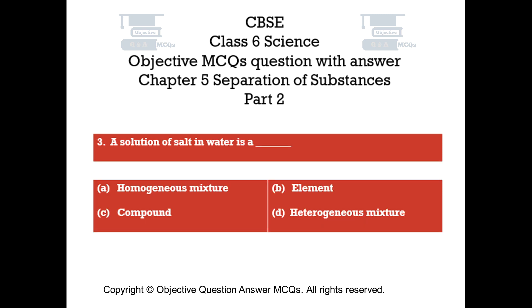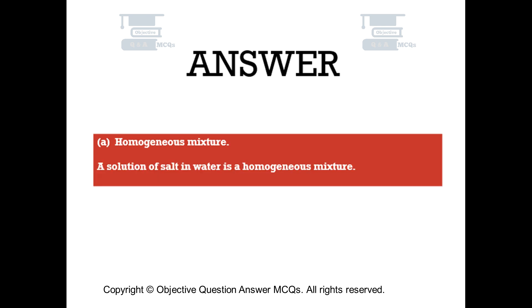Question number 3. A solution of salt in water is: Option A, Homogeneous mixture. Option B, Element. Option C, Compound. Option D, Heterogeneous mixture. The right answer is Option A — Homogeneous mixture. A solution of salt in water is a homogeneous mixture.